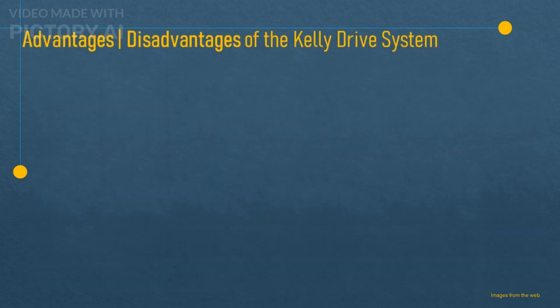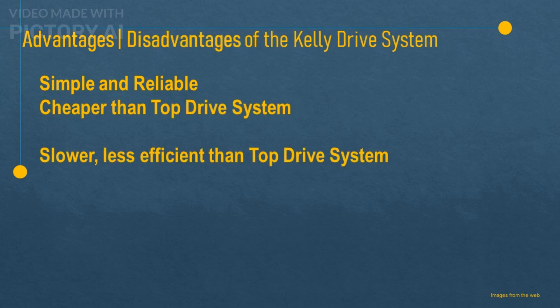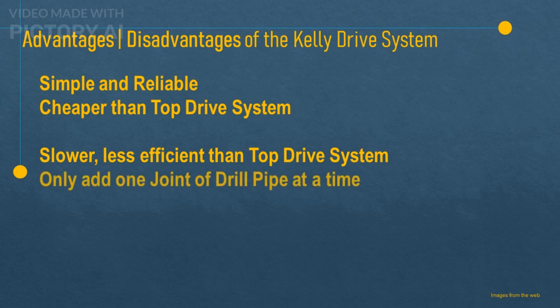Now let's talk about some advantages and disadvantages of this system. One advantage is that it is simple and reliable — it has been used for decades and proven to work well in many situations. Another advantage is that it is cheaper than a top drive system. A disadvantage is that it is slower and less efficient than a top drive system, as it can only add one joint of pipe at a time, which usually measures about 30 feet long.